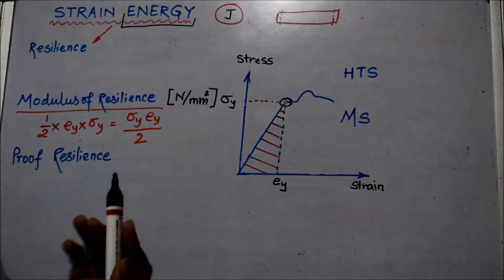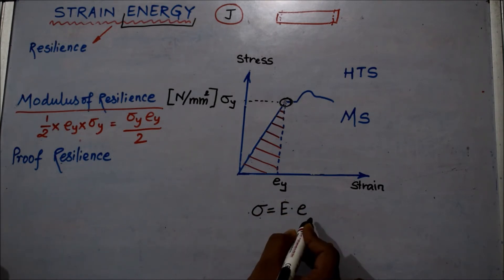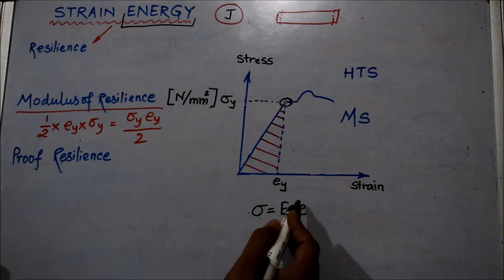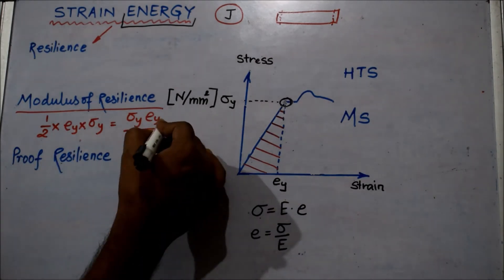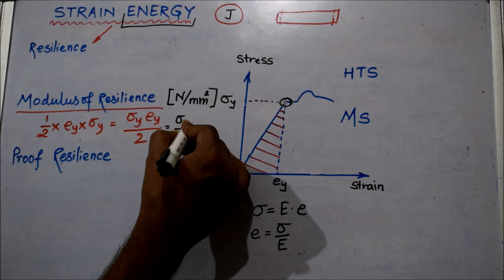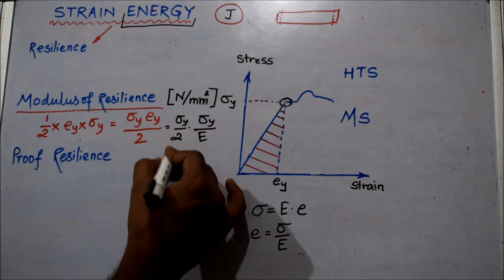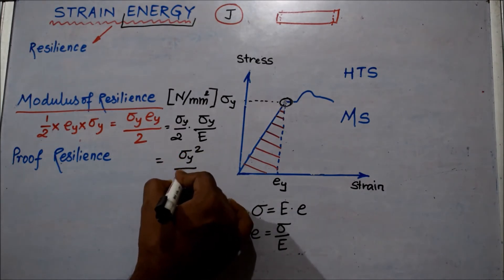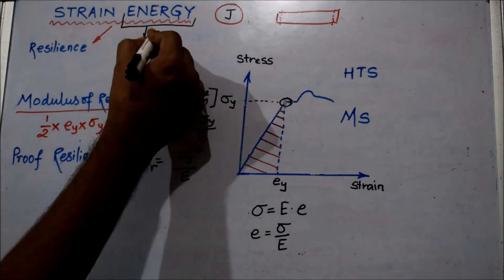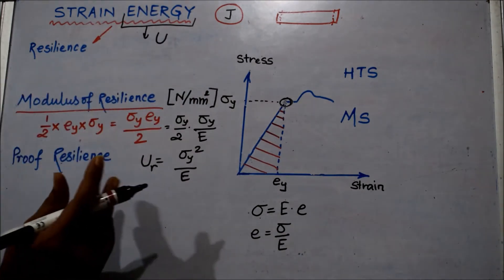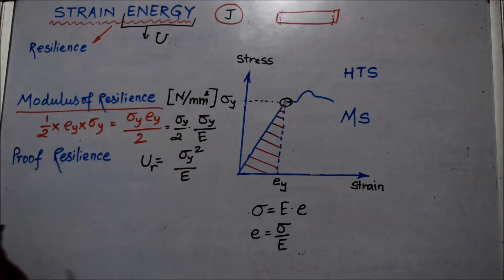From Hooke's law, stress is directly proportional to strain, and removing the proportionality sign introduces Young's modulus E, giving E = sigma / epsilon. Therefore, e_y = sigma_y / E. Substituting into the area formula: modulus of resilience U_R = sigma_y / 2 × sigma_y / E = sigma_y squared / (2E). U represents strain energy, and U_R represents modulus of resilience, given by sigma squared upon 2E.